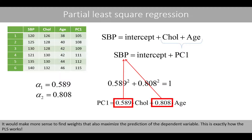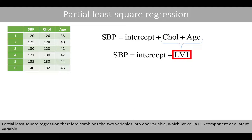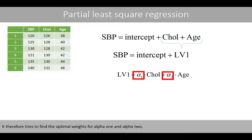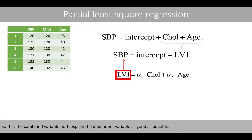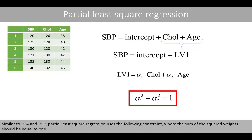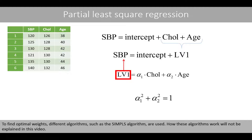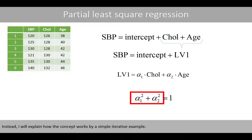This is exactly how partial least-square regression works. Partial least-square regression combines the two variables into one variable, which we call a PLS component or latent variable. It tries to find the optimal weights for alpha1 and alpha2 so that the combined variables both explain the dependent variable as good as possible, but also represent the explanatory variables in a good way. Similar to PCA and principal component regression, partial least-square regression uses the constraint where the sum of the squared weights should be equal to one. To find optimal weights, different methods such as the SIMPLS algorithm are used. I will explain the concept by a simple iterative example.